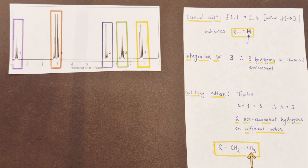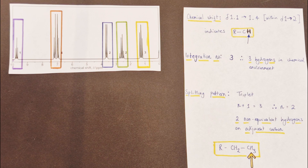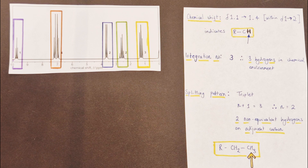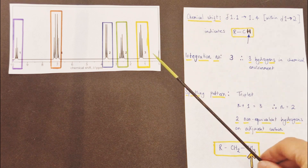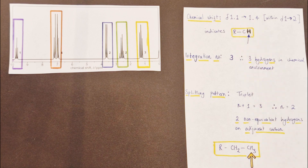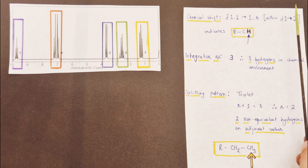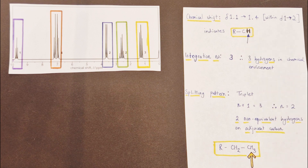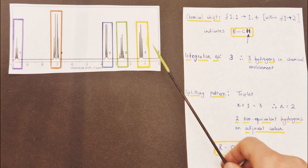Let's first talk about the chemical shift. The chemical shift gives us information about the chemical environment the hydrogen atoms are in. The lower the number — upfield and shielded — the further away these hydrogen atoms are from an electronegative element like oxygen or nitrogen. The higher the number, the closer the proximity to an electronegative element. Data booklets give us good indications of possible functional groups based on the chemical shift range. The range of 1.1 to 1.4 parts per million falls within 1 to 2 ppm, indicative of hydrogen atoms directly attached to carbons in an alkyl group.